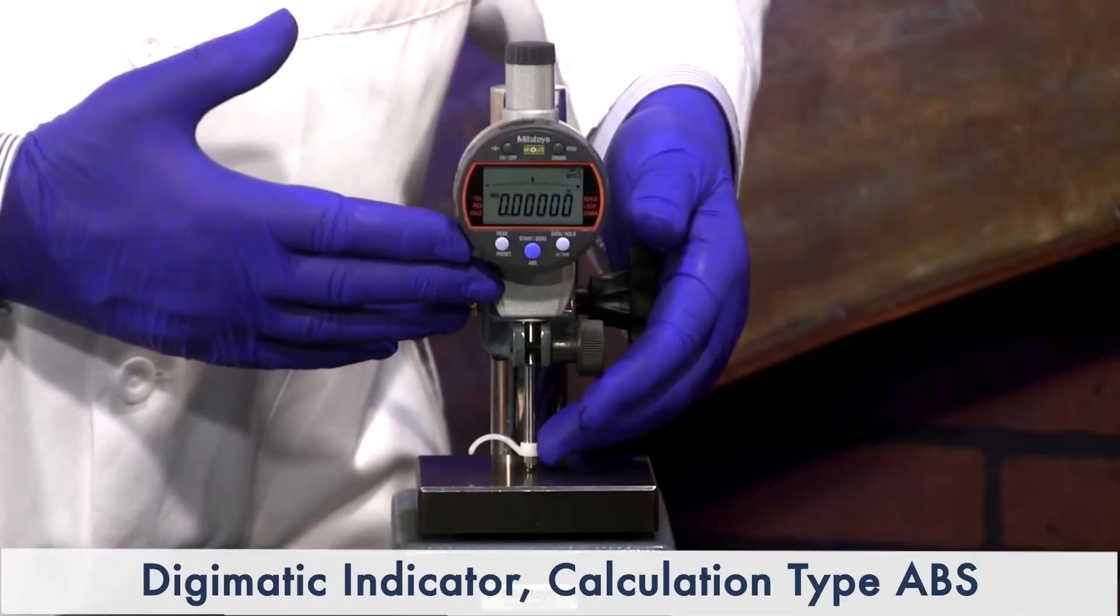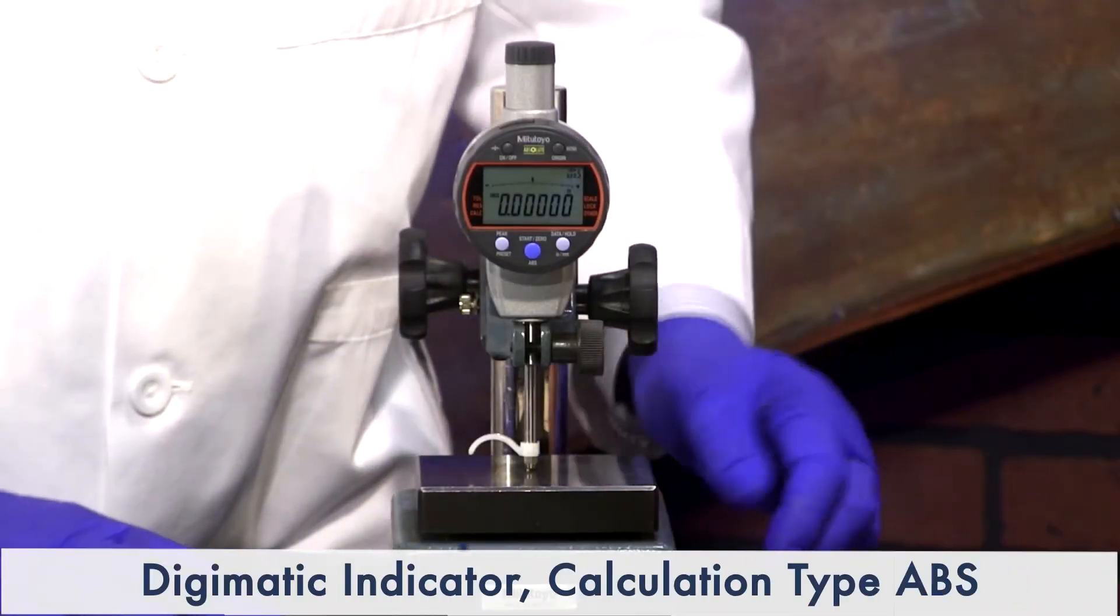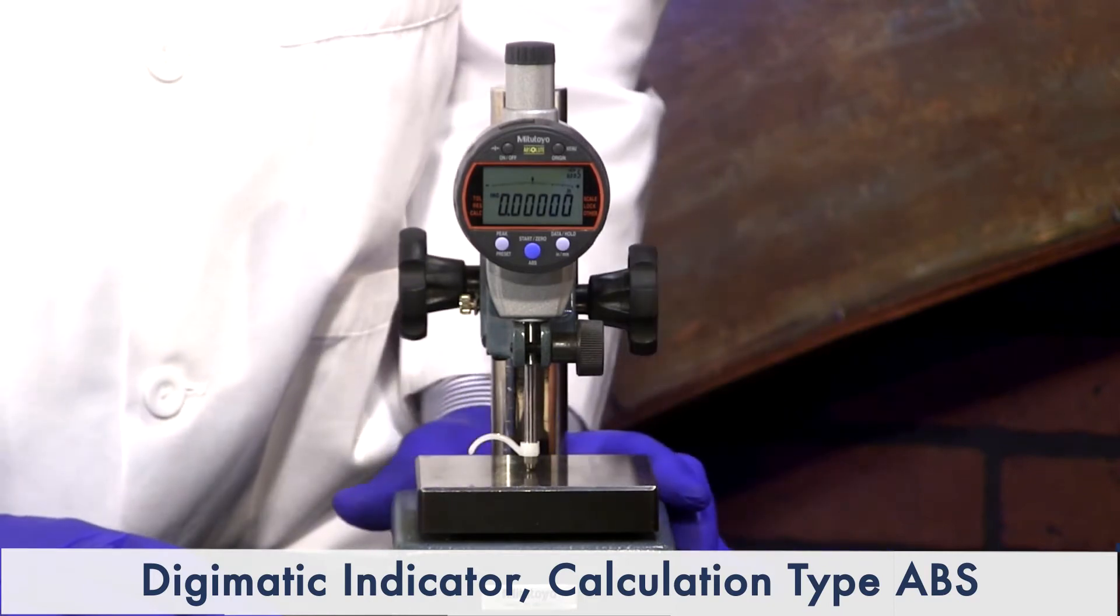Go ahead, Craig. Hi, this is the Mitutoyo Digimatic indicator. It also calculates. It has different functions. It'll function as a normal indicator, but it also will do calculations, which is very handy.